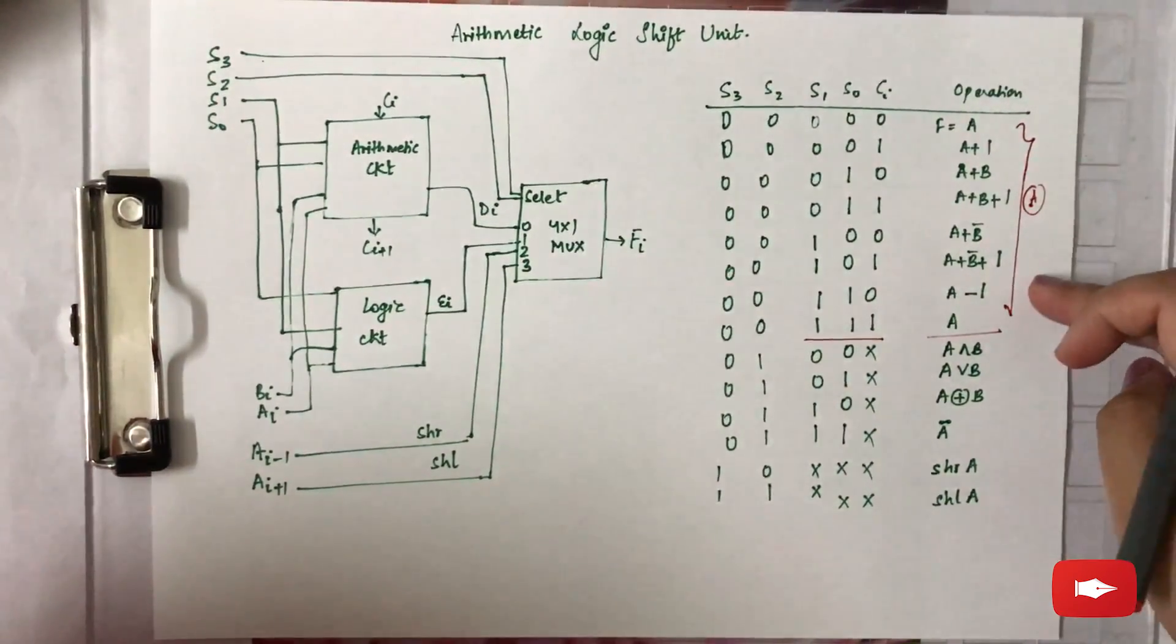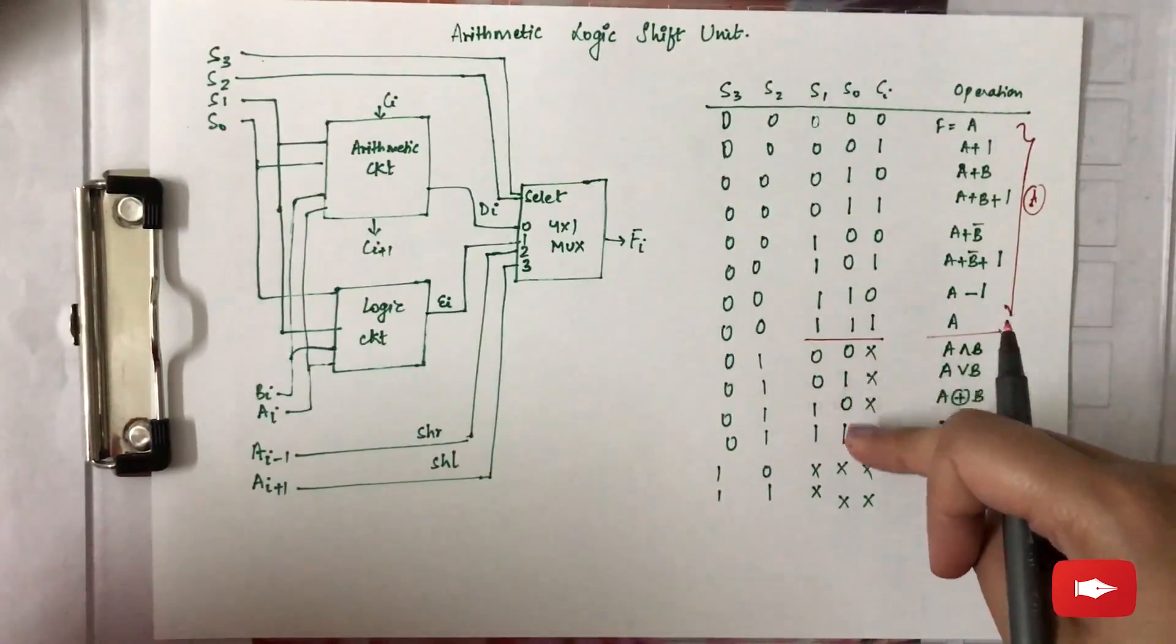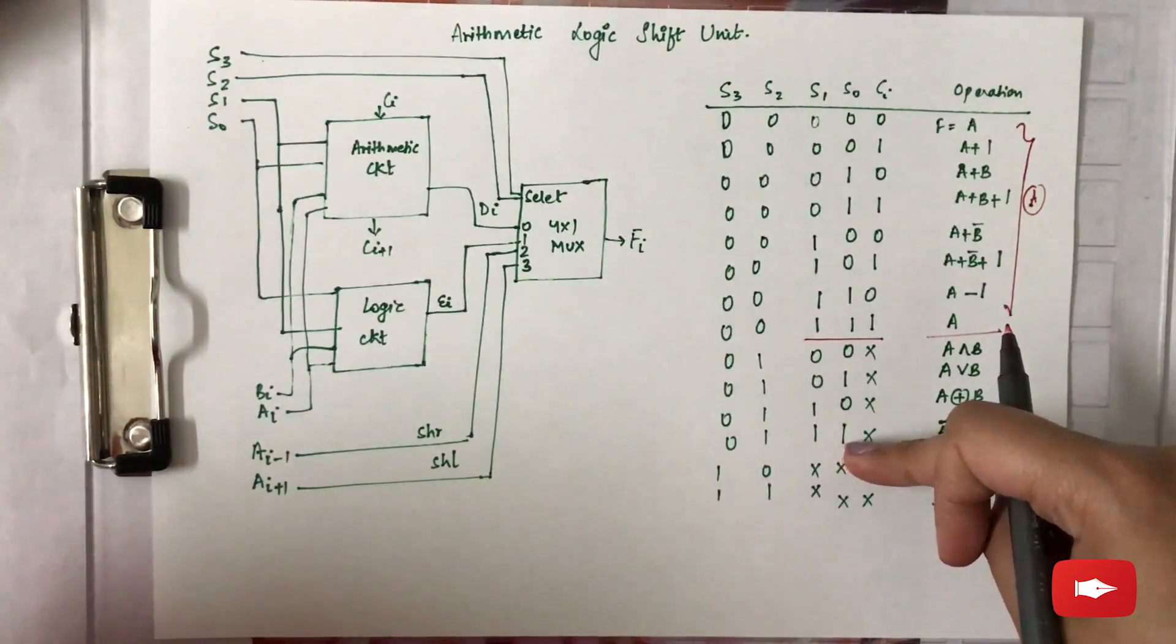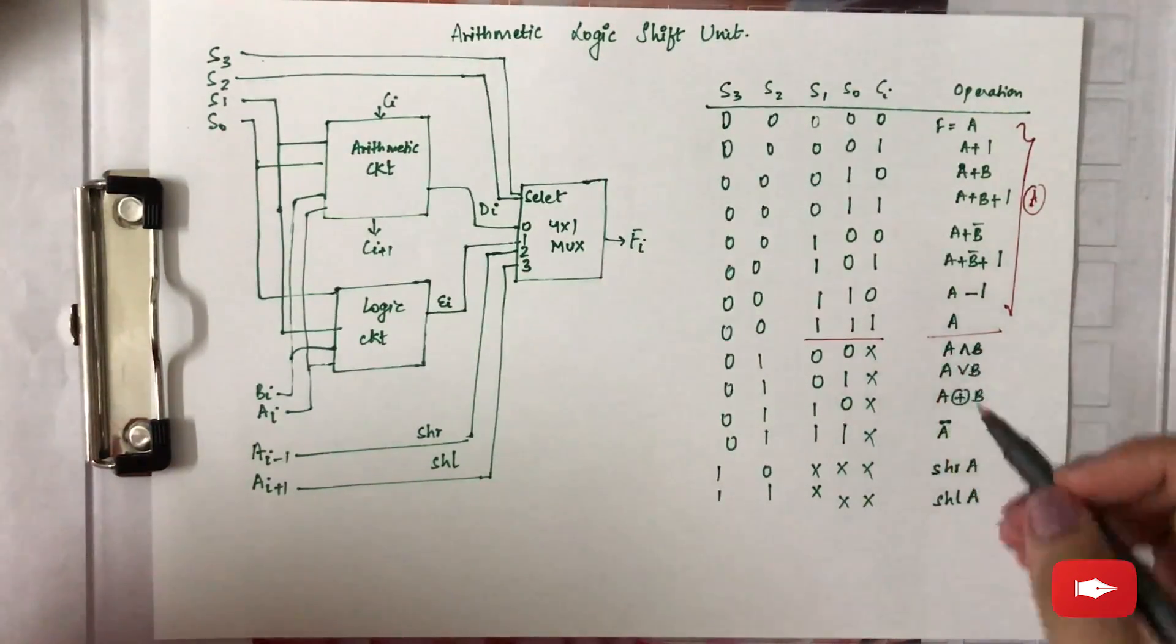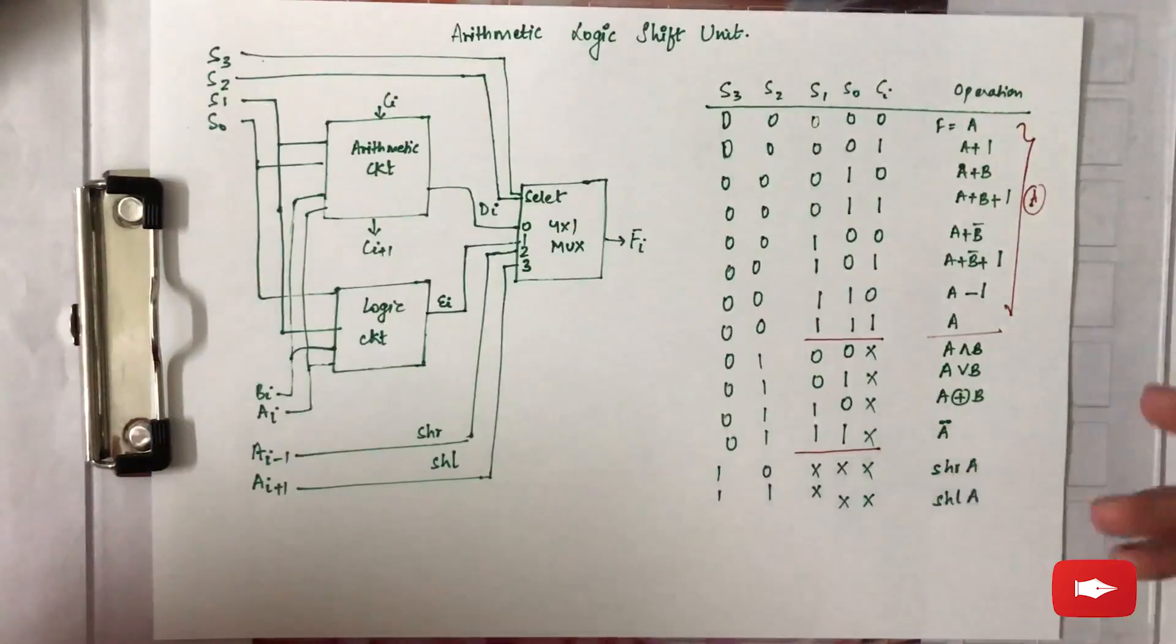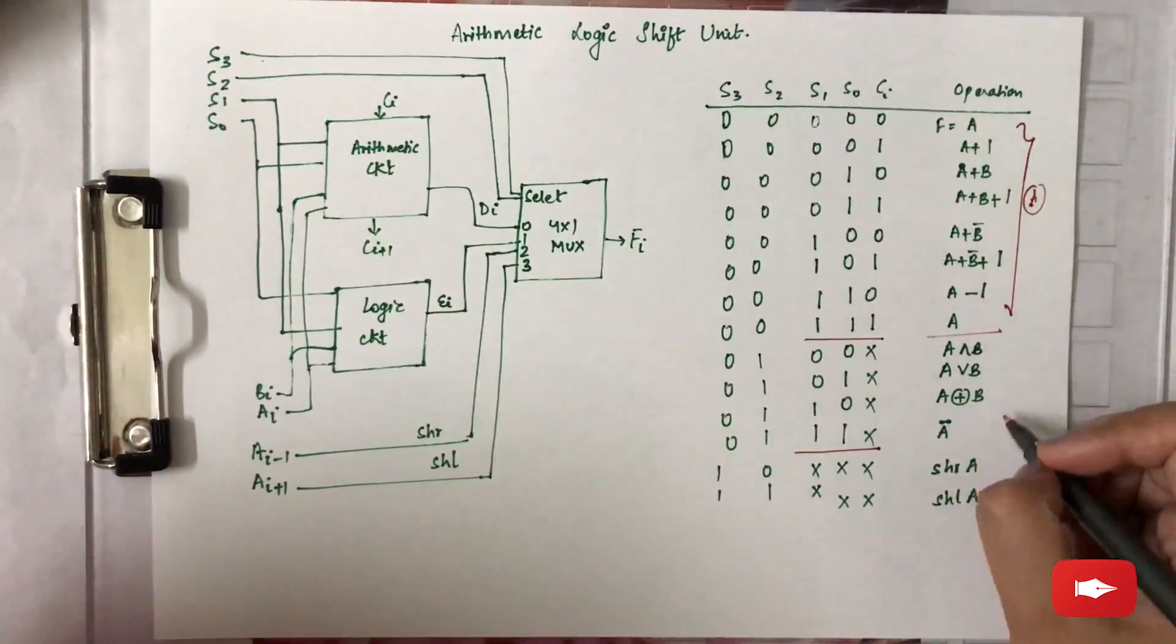These are the operations. The first eight operations are the arithmetic operations. Next four operations are the logic micro-operations which do not need a carry, therefore the carry input is don't care. Next four are the logic micro-operations till here.